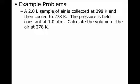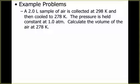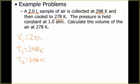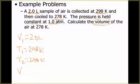Here's an example using Charles' law. We have a 2-liter sample of air, so V1 = 2 liters. It's collected at 298 K, so T1 = 298 K. Then it's cooled to 278 K, so T2 = 278 K. The pressure is held constant, so if it's constant, it does not need to be in our equation — it's going to be the same both times. We want to know the new volume at our new temperature, so V2 is what we're solving for.